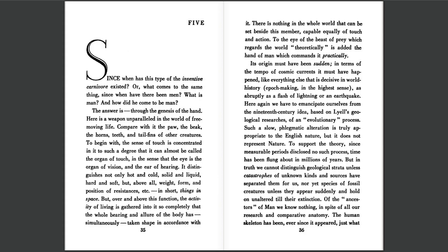Section 5. Since when has this type of inventive carnivore existed? Or, what comes to the same thing, since when have there been men? What is man? And how did he come to be man? The answer is through the genesis of the hand. Here is a weapon unparalleled in the world of free-moving life, compared with the paw, the beak, the horns, teeth, and tail fins of other creatures. To begin with, the sense of touch is concentrated in it to such a degree that it can almost be called the organ of touch.